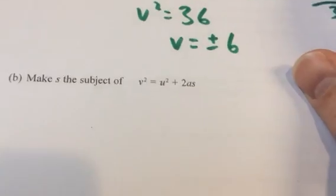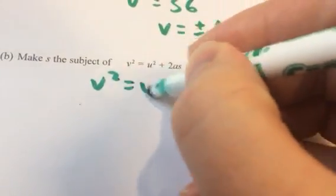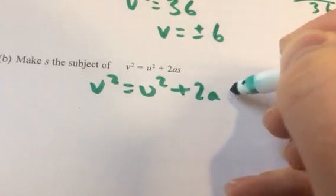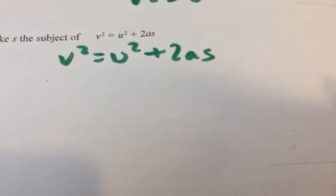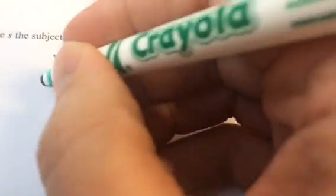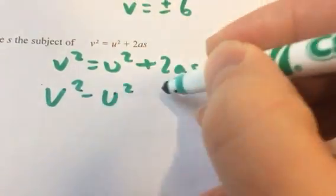Now some rearranging. v squared equals u squared plus 2as. It's that same formula. We want to make s the subject of the formula.